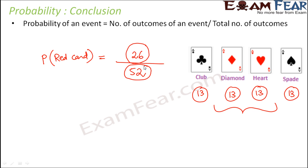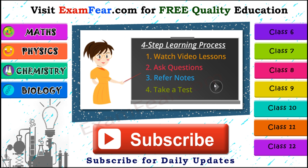So when we calculated the probability of getting a Queen, a Spade, or a Diamond 5, we used the same logic. You can apply this same logic to find out probabilities of more events like this. Thank you. Please visit examfear.com for free quality education — you can watch video lessons, ask questions, refer to notes and take a free online test. We have content for class 6 to 12 on physics, chemistry, mathematics and biology along with practical videos. Please subscribe to our channel for daily updates. Thank you.